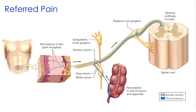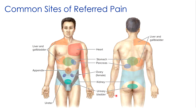The referred pain doesn't always correspond to skin superficial to the organ. A map shows common sites of referred pain — for example, heart attack pain is often felt on the left side of the chest and can radiate down the medial side of the left arm. Liver and gallbladder pain can be felt on the right shoulder. These are examples of pain being perceived in a location that doesn't geographically represent the viscera actually producing it.